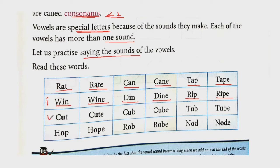Then next vowel is U. So here C-U-T, cut. Which vowel came here? U. Cute C-U-T-E, cub C-U-B, cube C-U-B-E, tub T-U-B, and tube T-U-B-E. Similarly, like the words above, all these words also have different pronunciation.